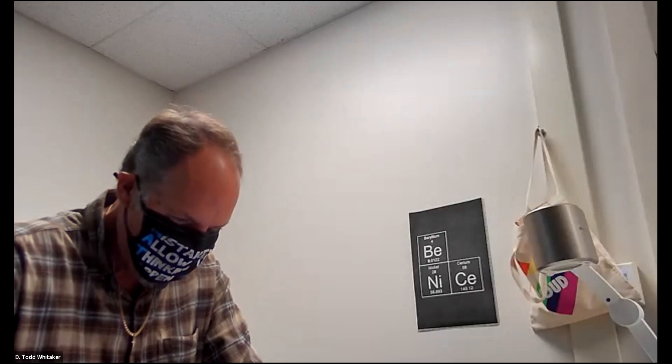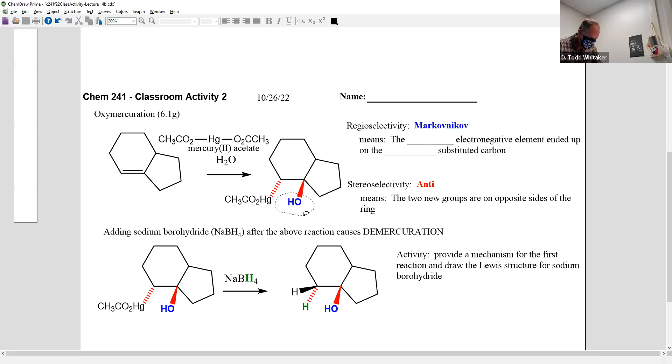All right, ladies and gentlemen, we're going to explore oxymercuration, where you add an oxygen on the more substituted carbon and a mercury on the less substituted carbon.